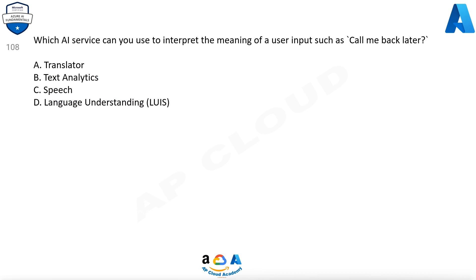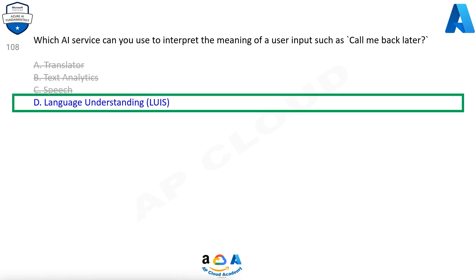Question 108. Which AI service can you use to interpret the meaning of a user input such as 'call me back later'? A. Translator. B. Text analytics. C. Speech. D. Language understanding, LUIS. Answer: D. Language understanding (LUIS) is a cloud-based AI service that applies custom machine learning intelligence to a user's conversational natural language text to predict overall meaning and pull out relevant, detailed information.